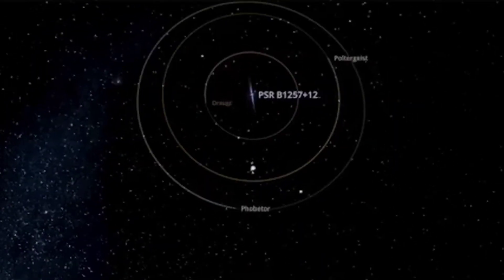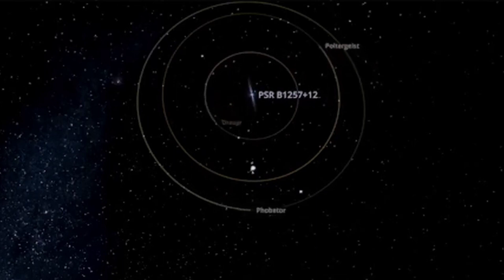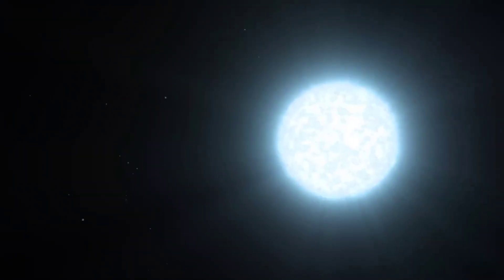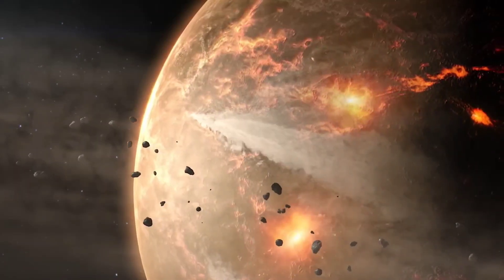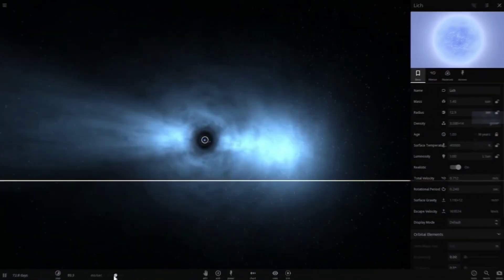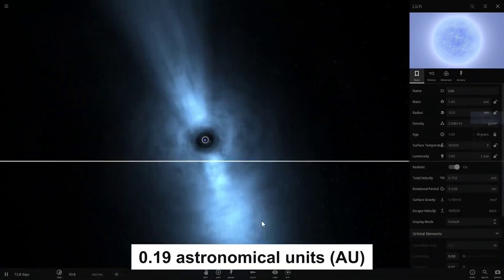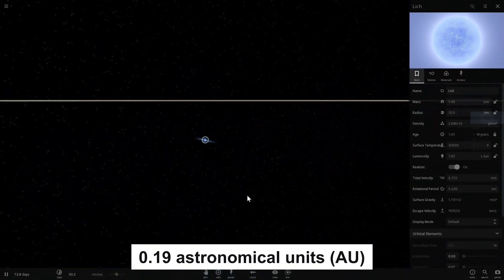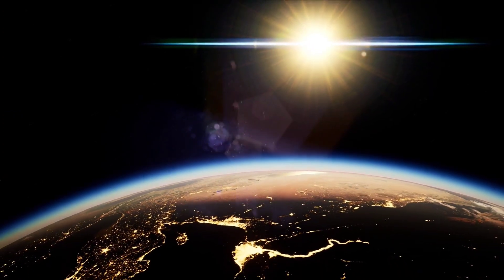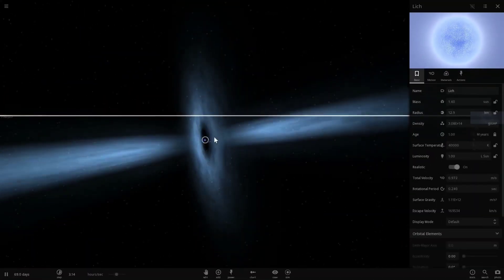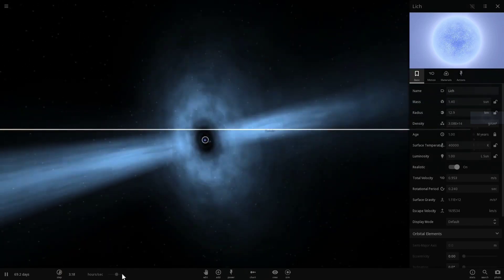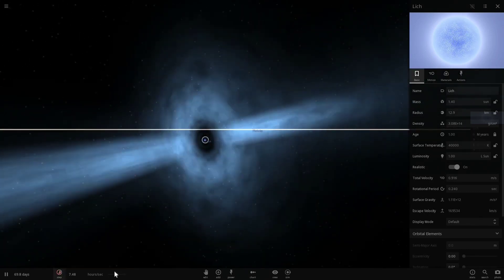PSR-B-1257-12b has a mass four times that of Earth and orbits its star at a distance of about 0.19 astronomical units (AU), which is much closer than the distance between Earth and the Sun. This exoplanet completes one orbit around its star every 25.3 Earth days.